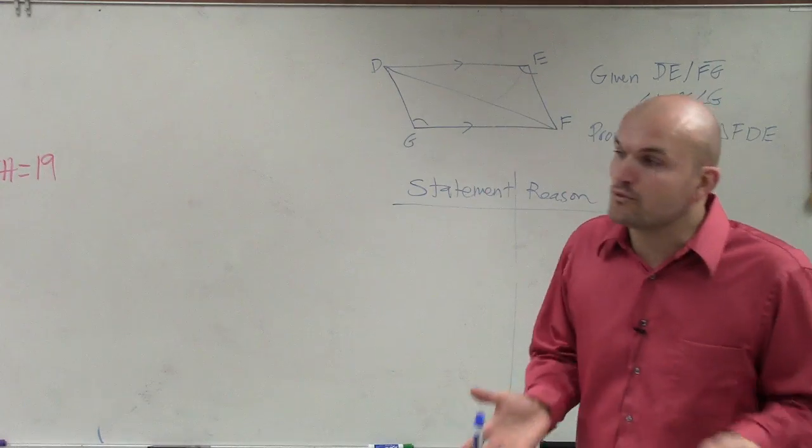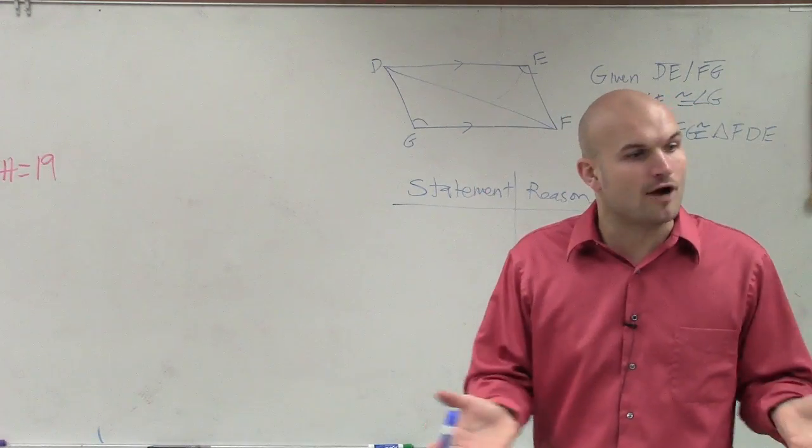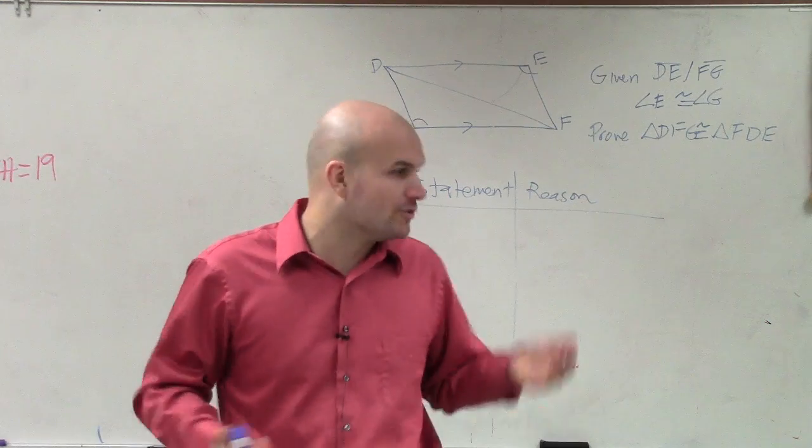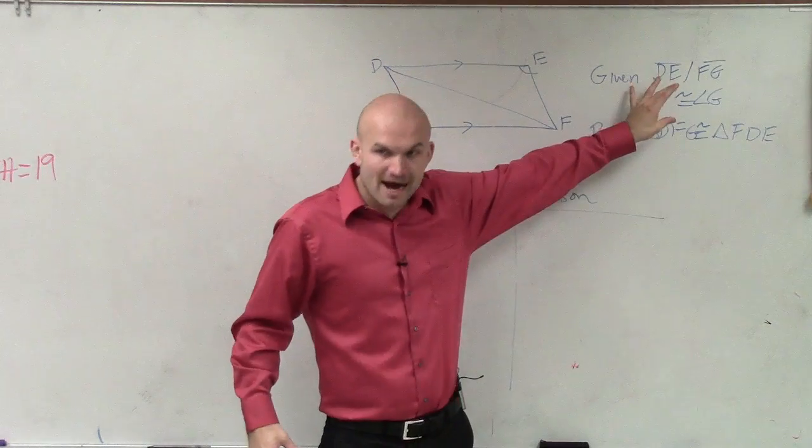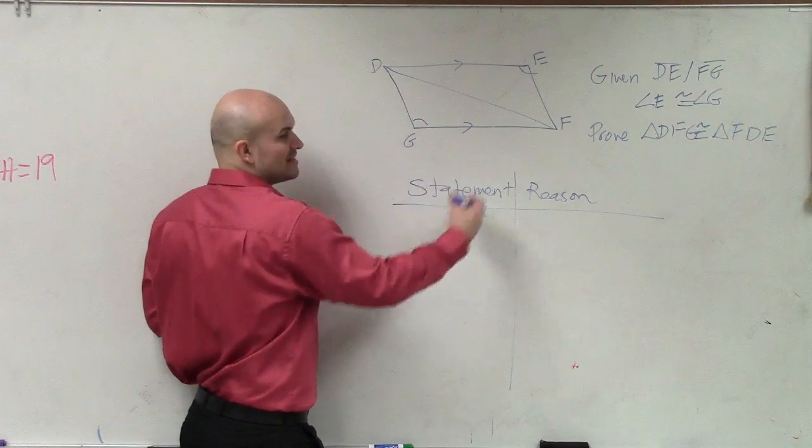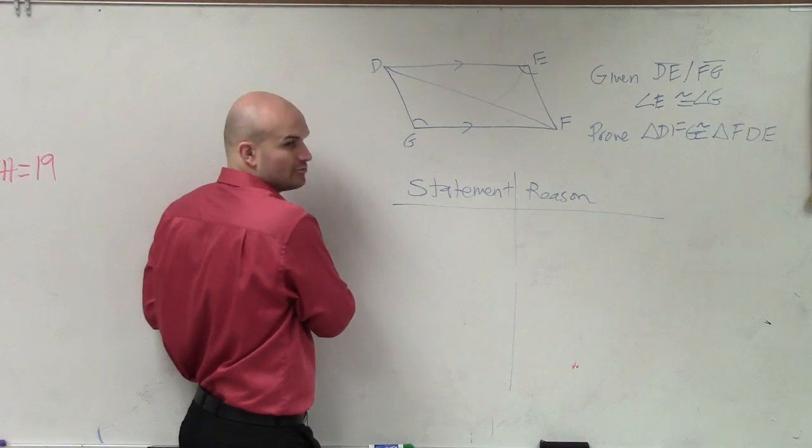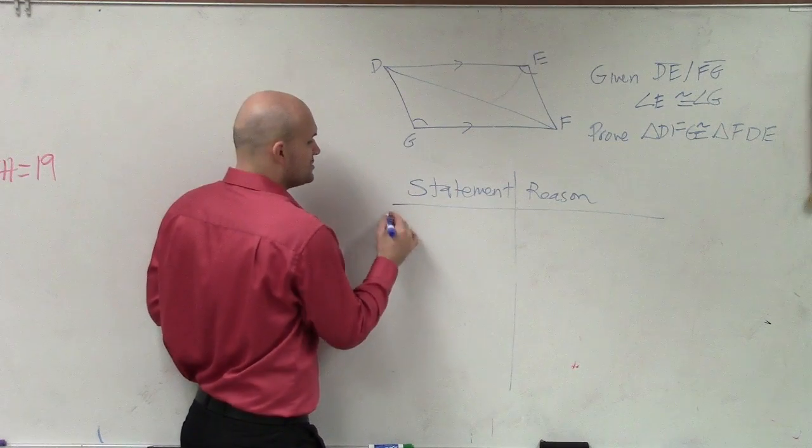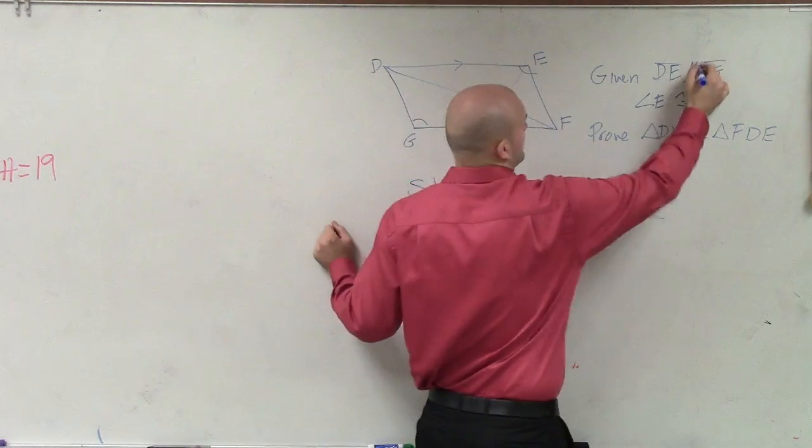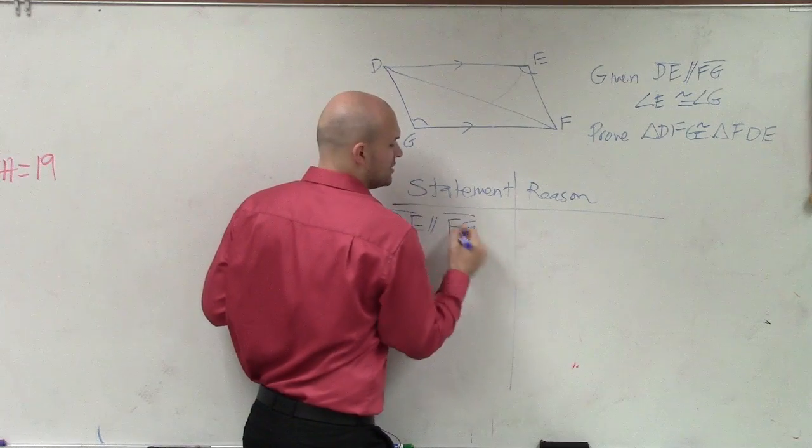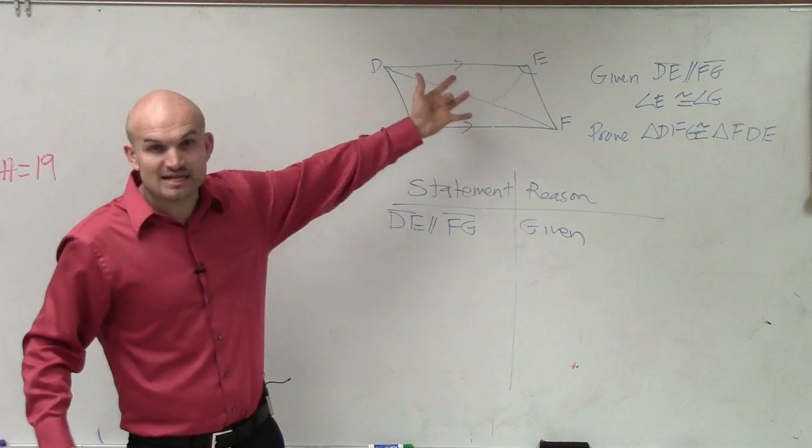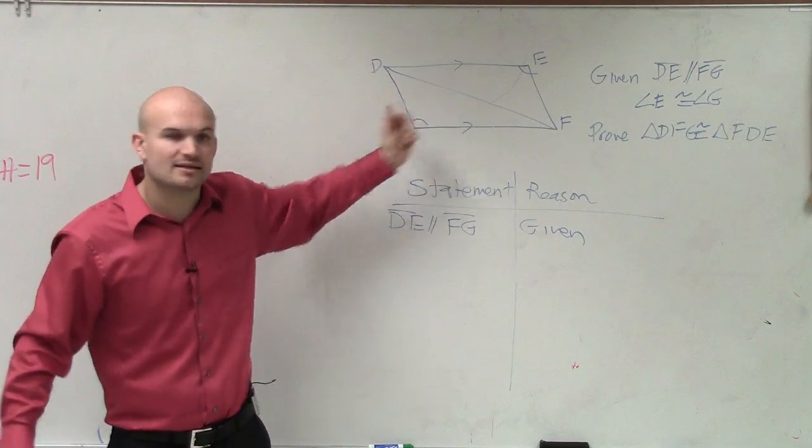Statement and reason. Again, the first time when we're setting up our proof, we want to have our premises written out. What is it we know for a fact that is going to be true? That's going to be what we are provided, which is our given statements. So we write down our statements, and then obviously the reason why we know those are true because they've been given to us. So the first one I can say is DE is parallel to FG. Why do we know that? Because it's given to us. Make sure that your figure represents that, and those two arrows show us that they're parallel.